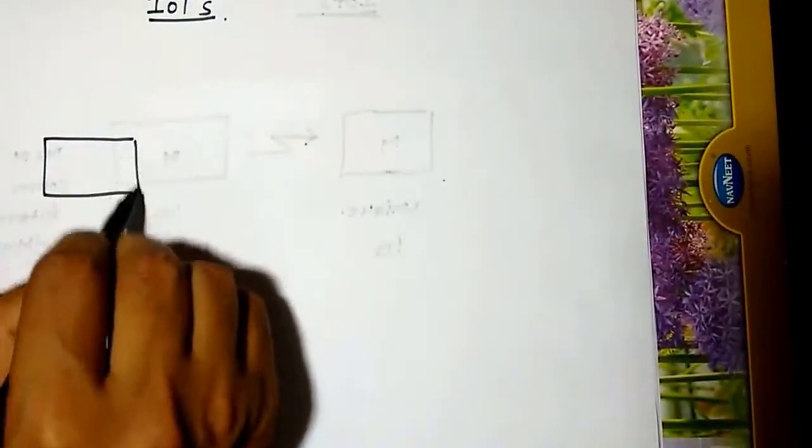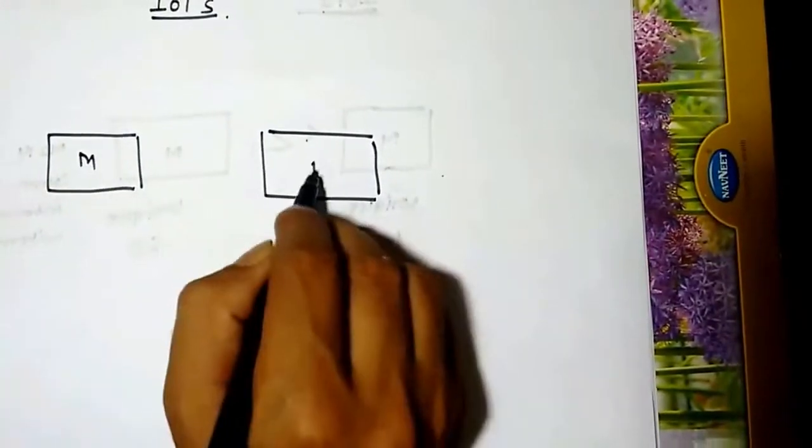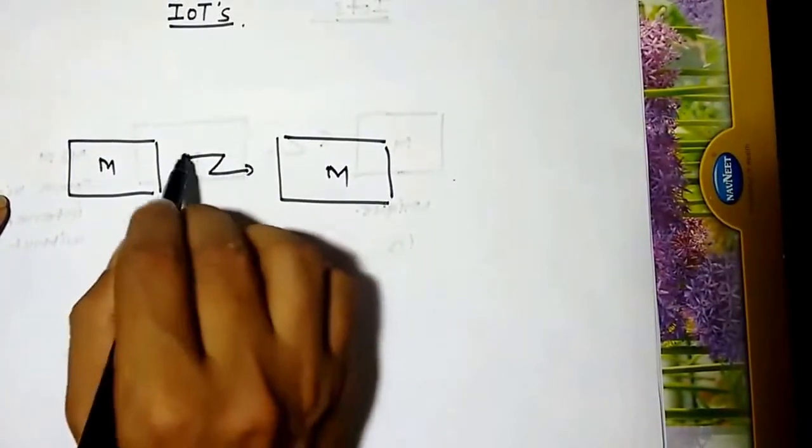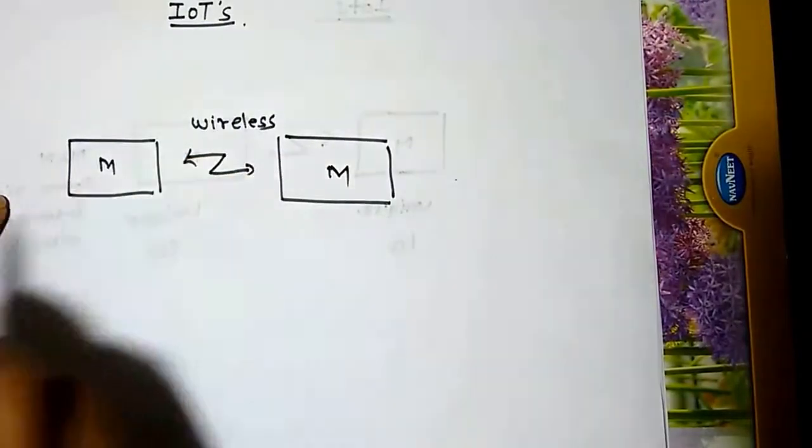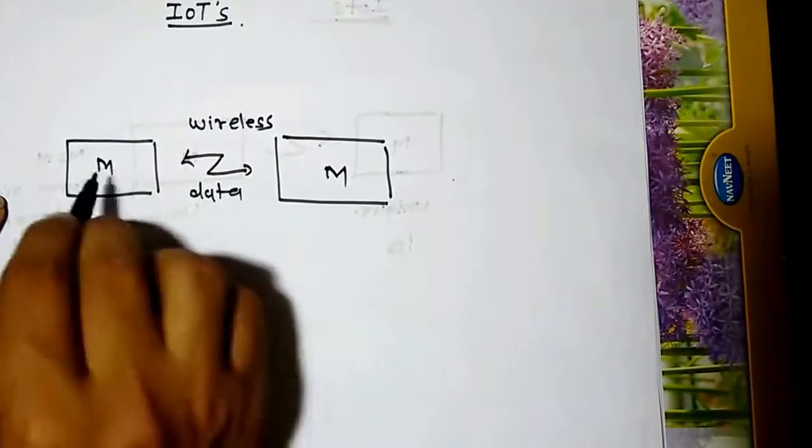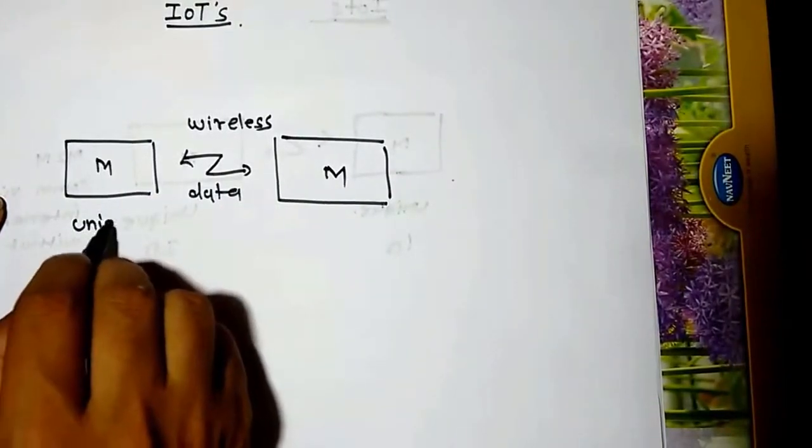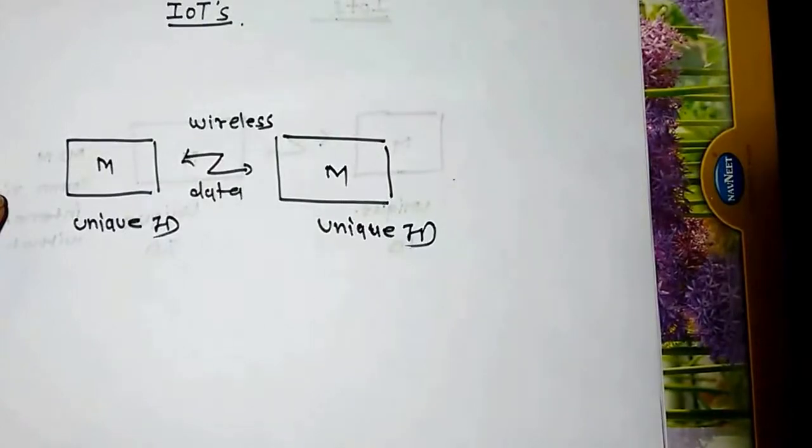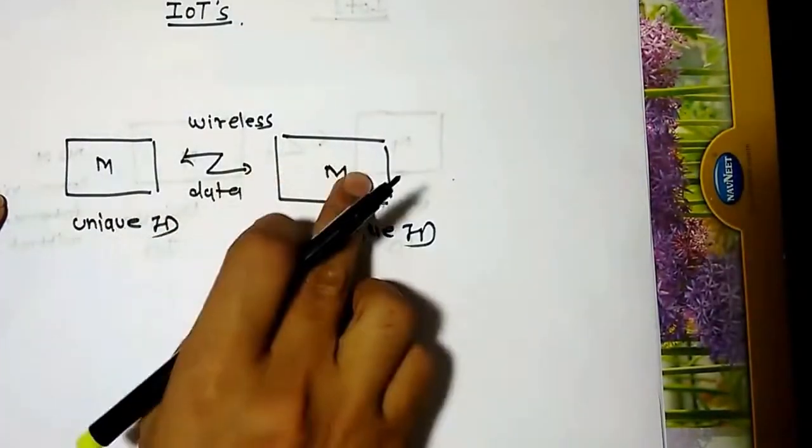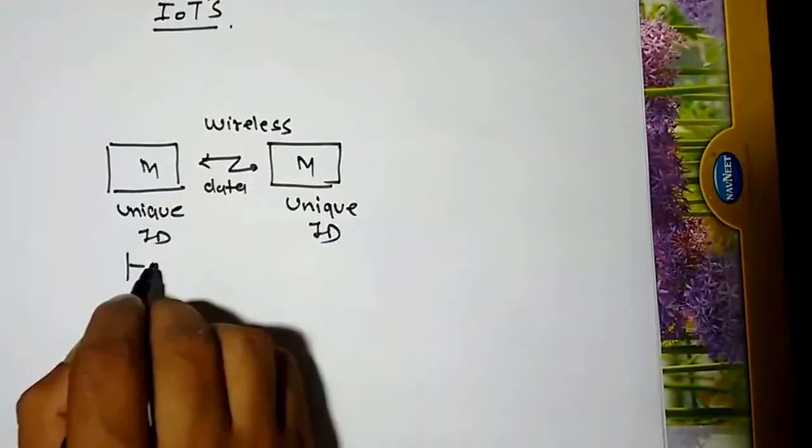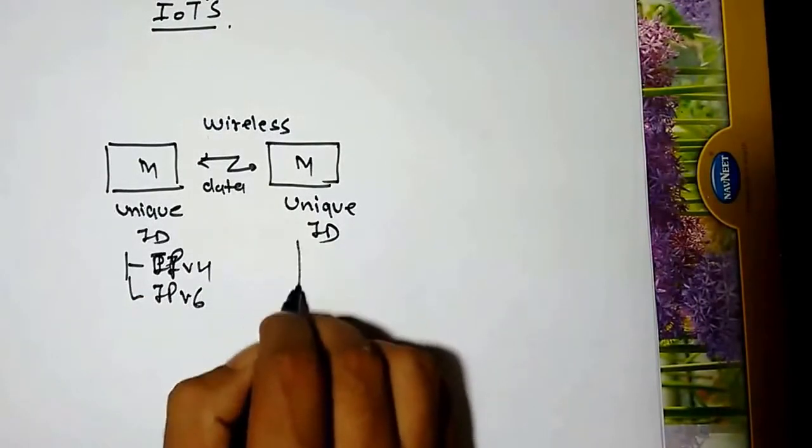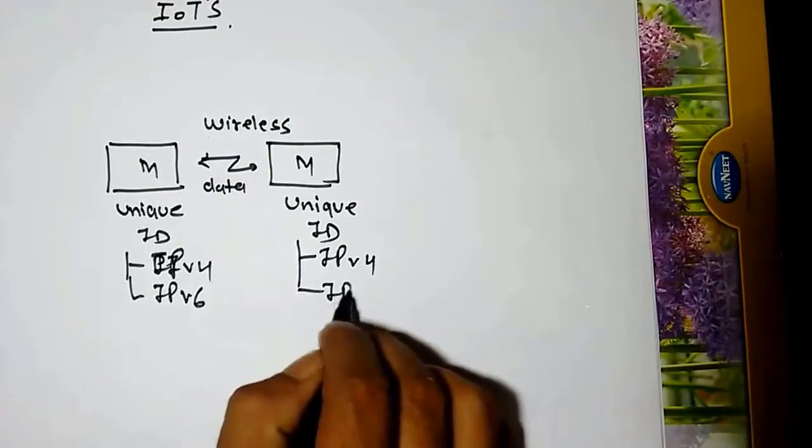The internet of things is a scenario in which two objects or more than two objects, that is machines, can be connected together through wireless and they can transfer data to each other. These machines are given unique IDs and can be connected together without human interaction. This can be IP version 4 or IP version 6.